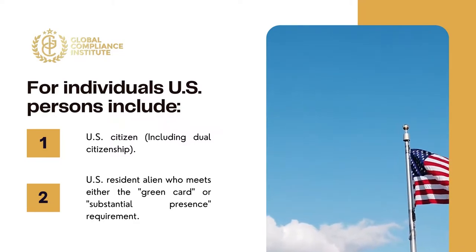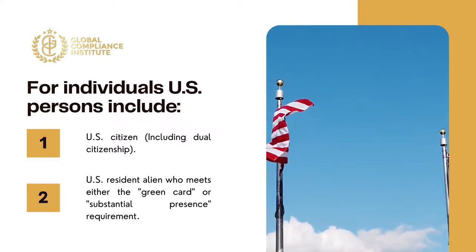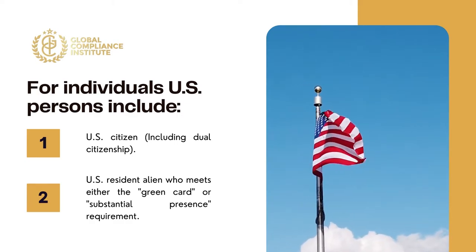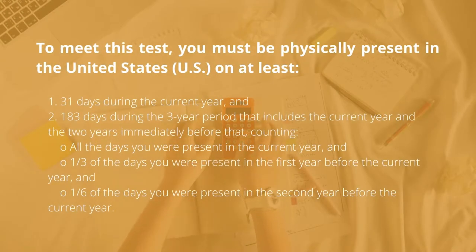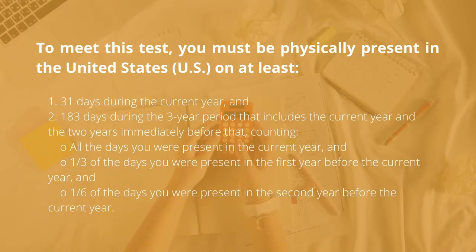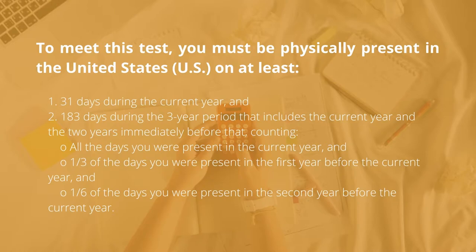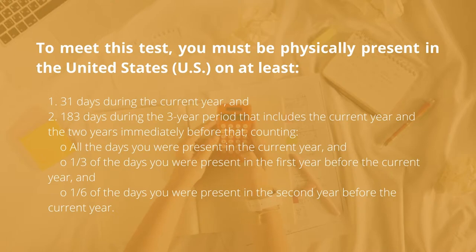US resident aliens who meet either the green card or substantial presence requirement are also considered US persons. To meet the substantial presence test, you must be physically present in the United States on at least 31 days during the current year, and 183 days during the three-year period that includes the current year and the two years immediately before that — counting all days present in the current year, one third of the days present in the first year before the current year, and one sixth of the days present in the second year before the current year.